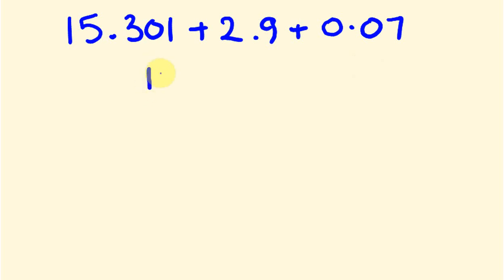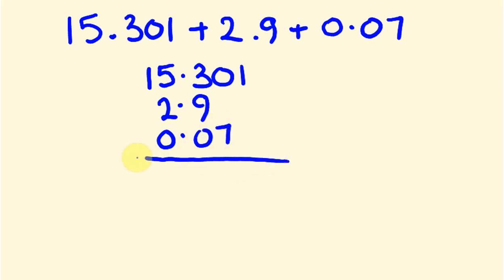So we would write this as follows: 15.301, and I'm going to add this to 2.9, so you're going to see the decimal places lining up together, and we're going to add this to 0.07. We're going to add these all together.